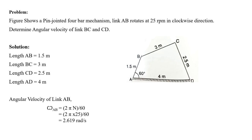Now let's discuss an example of analysis of a four-bar mechanism using the instantaneous center method. The given four-bar mechanism has links ABCD with fixed link AD. The length of input link AB is 1.5 m, link BC is 3 m, link CD is 4 m, and link AD is 2.5 m. Link AB rotates at 25 RPM clockwise. Using this, omega_AB = 2πN/60 = 2.619 rad/s.